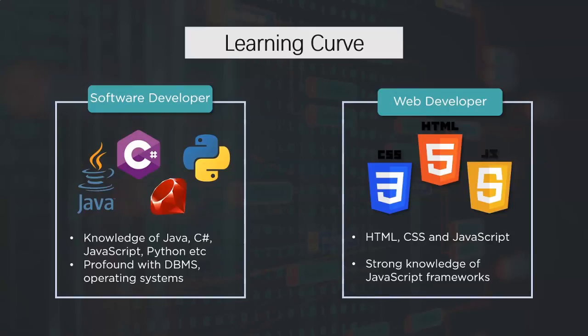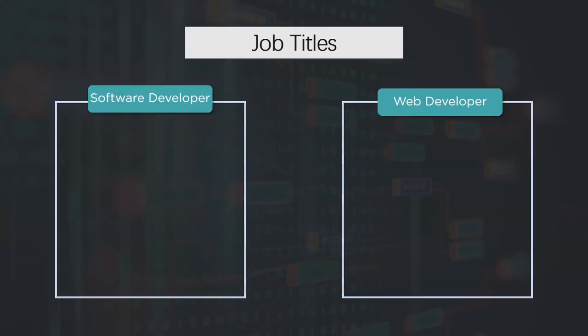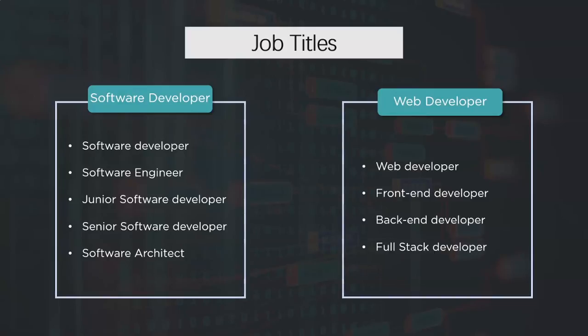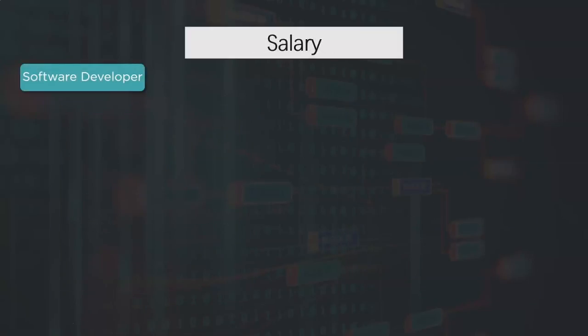The next parameter is job titles. For software development, titles include software developer, software engineer, junior software developer, senior software developer, and software architect. For web development, titles include front-end developer, back-end developer, full-stack developer, or simply web developer. Companies have discretion over assigning these job roles to their employees.